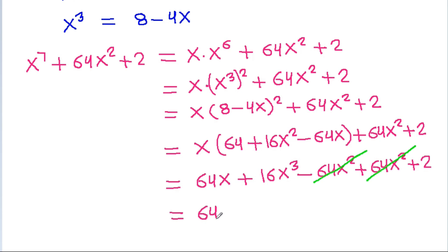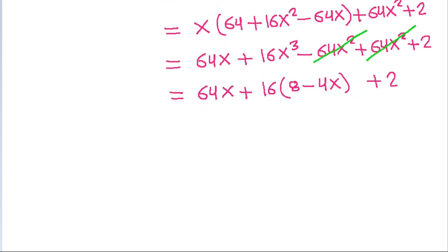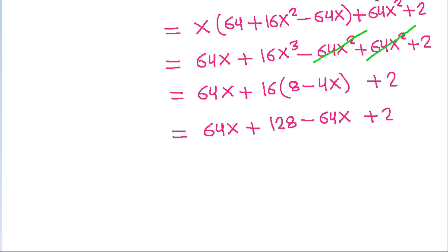So it is 64x plus 16 times 8 is 128, and 16 times minus 4x is minus 64x, plus 2, and 64x will get cancelled. So it is 128 minus 2, that is 130. And the second method: